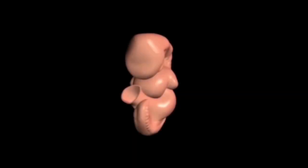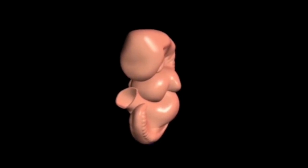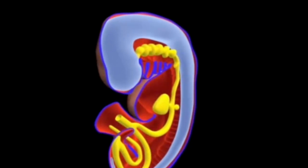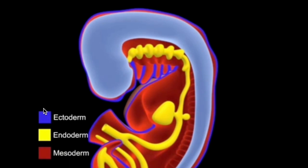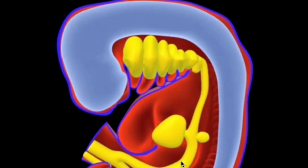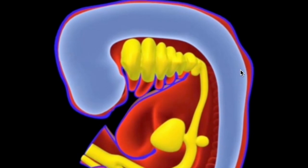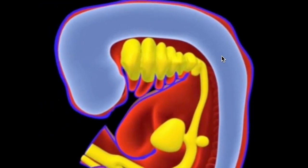The respiratory system first appears at the start of week four of embryonic development. Shown here is a sagittal section of a four-week-old embryo. Throughout the animation, the embryonic germ layers are color coded: blue for ectoderm, yellow for endoderm, and red for mesoderm. The cranial end, caudal end, ventral, and dorsal are labeled. This is the primordial or developing pharynx at the cranial part of the foregut, which is where our story will begin.